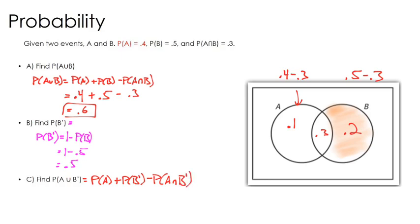Well, in this situation, probability of A is 0.4, and probability of B complement is 0.5. Then we're going to subtract the probability of A and not B, and this is the part that's a little bit tricky to think about. Maybe some shading over here in our diagram would work.